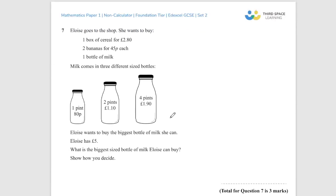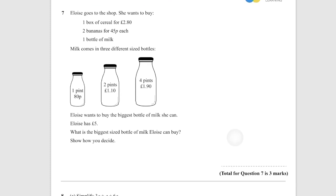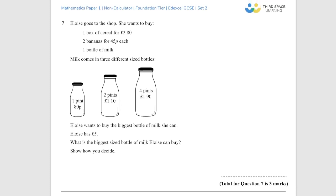Question 7. Eloise goes to the shop. She wants to buy one box of cereal, two bananas for 45 pence each, and one bottle of milk. Milk comes in different sizes. I was struggling to get my head around that question. Milk comes in three different sizes. Eloise wants to buy the biggest bottle of milk she can. Eloise has five pounds. What is the biggest bottle of milk she can buy?